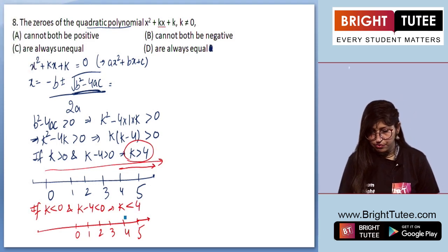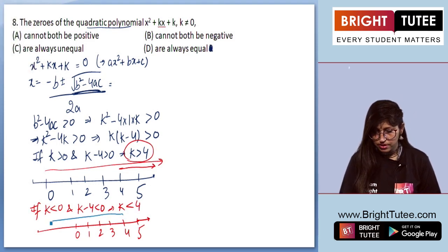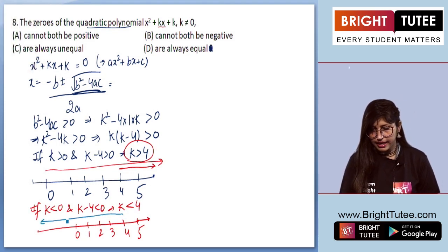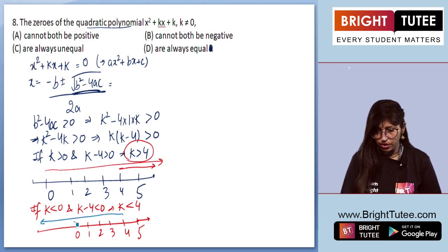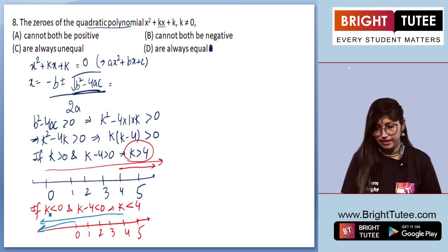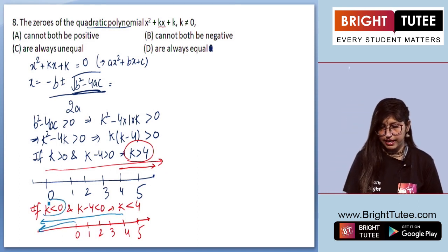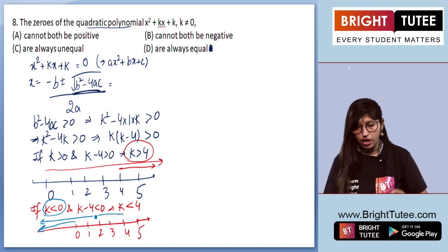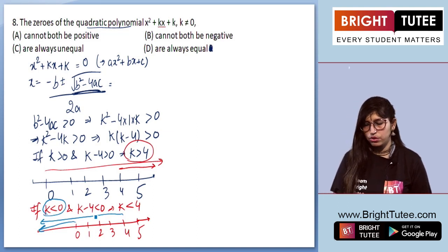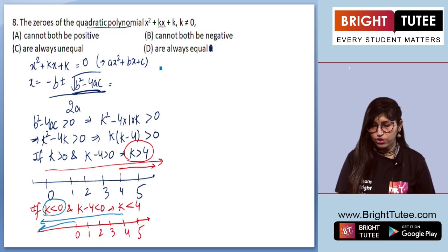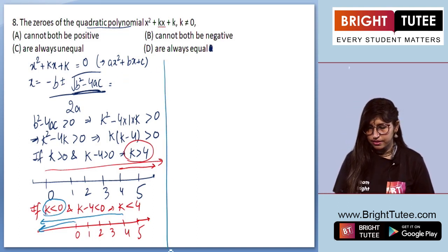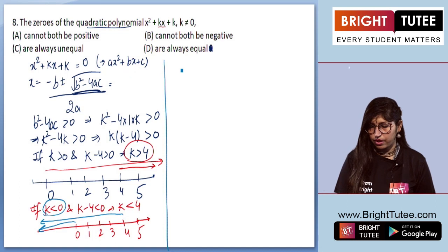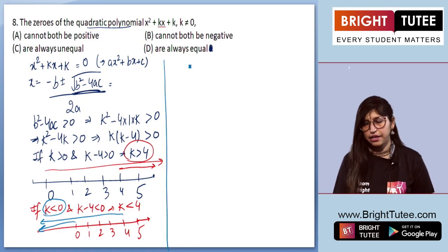On the number line, k < 4 covers to the left of 4, and k < 0 also covers to the left of 0. The common value for k is k < 0.